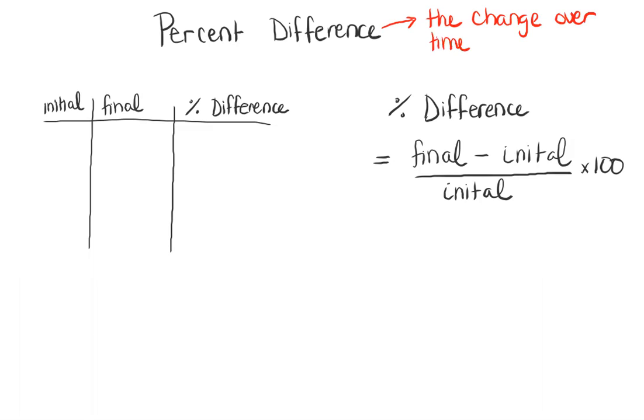So the formula that we use in order to calculate percent difference is the following. The final value minus the initial value divided by the initial value. And since we are trying to calculate a percentage, we're going to multiply this whole thing by a hundred.